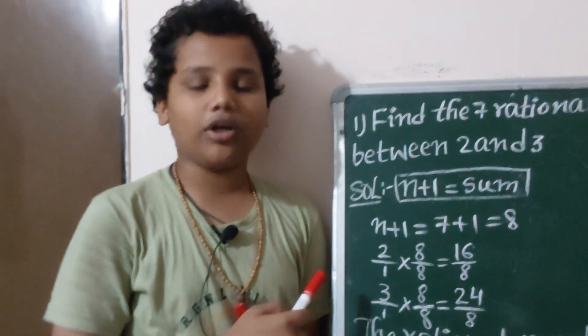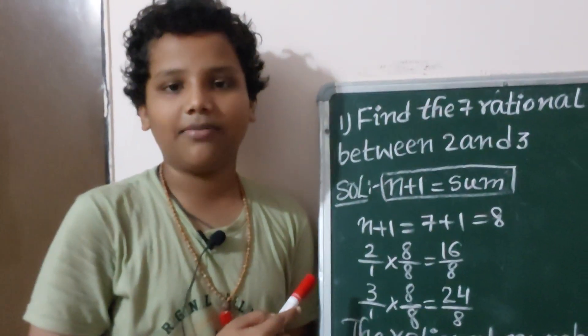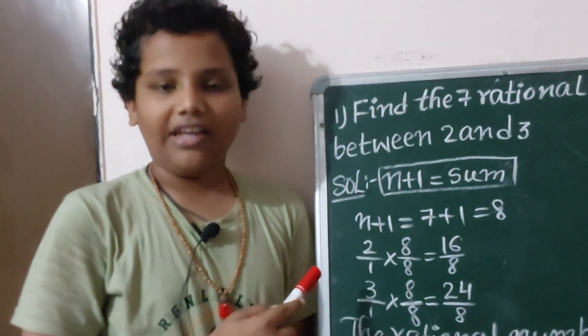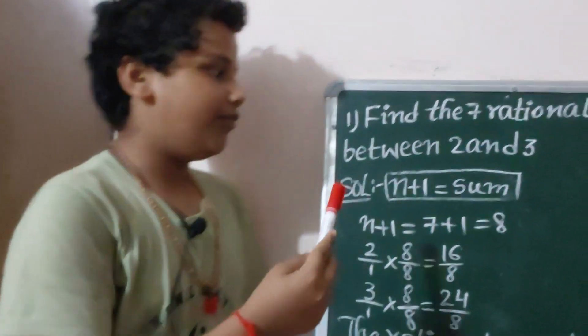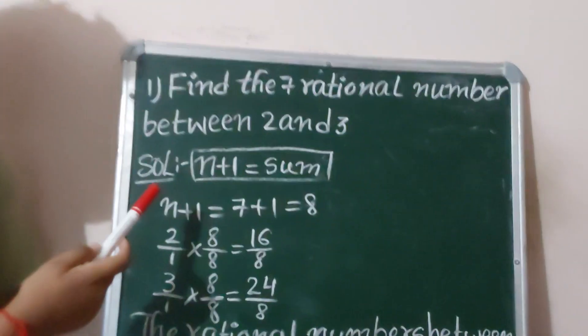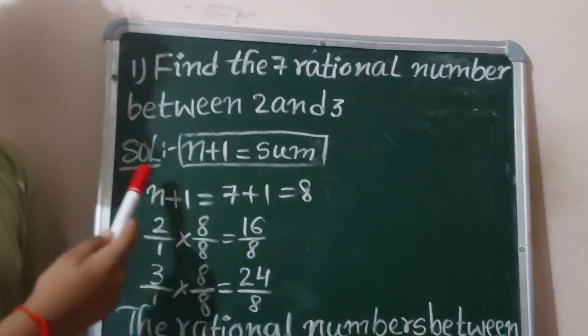Welcome to Sims. Today our topic is Rational Numbers. Find the rational numbers between 2 and 3. Solution.